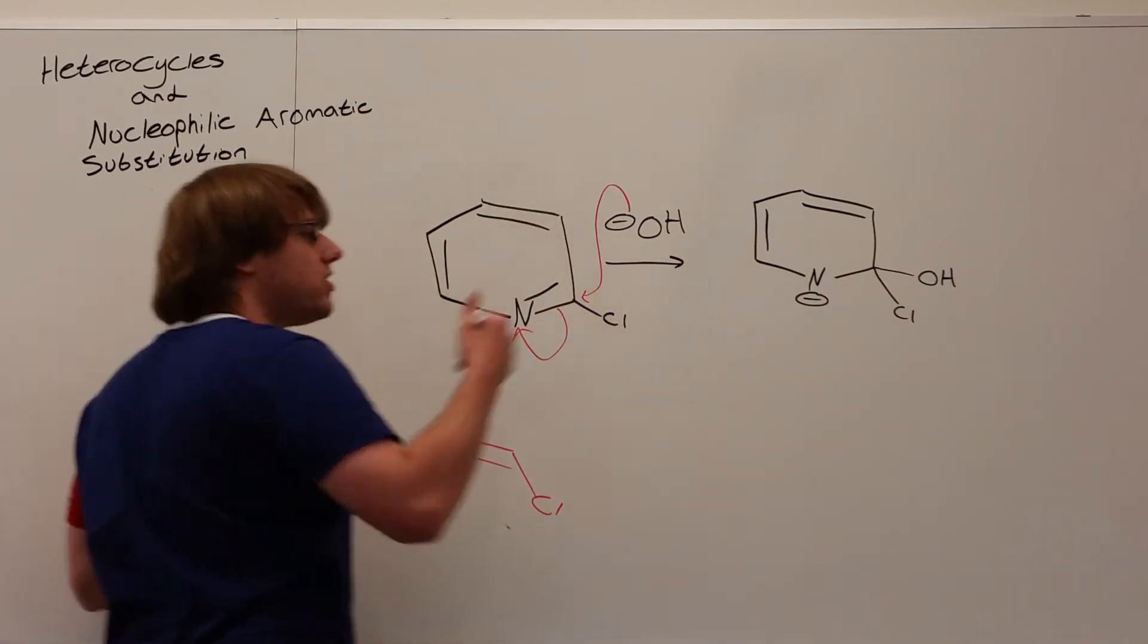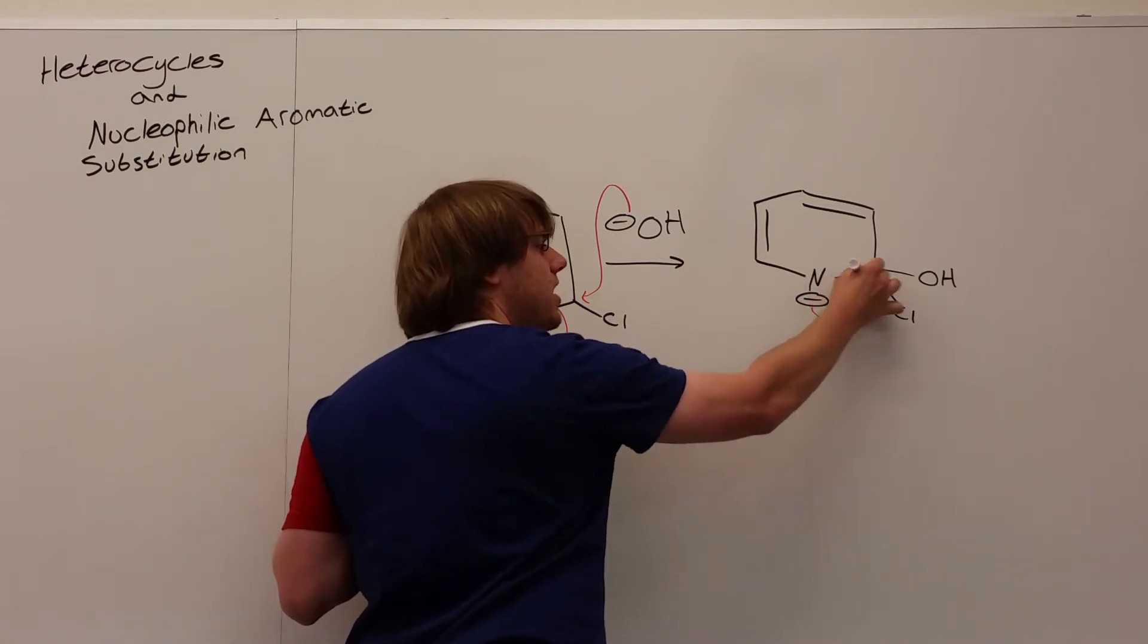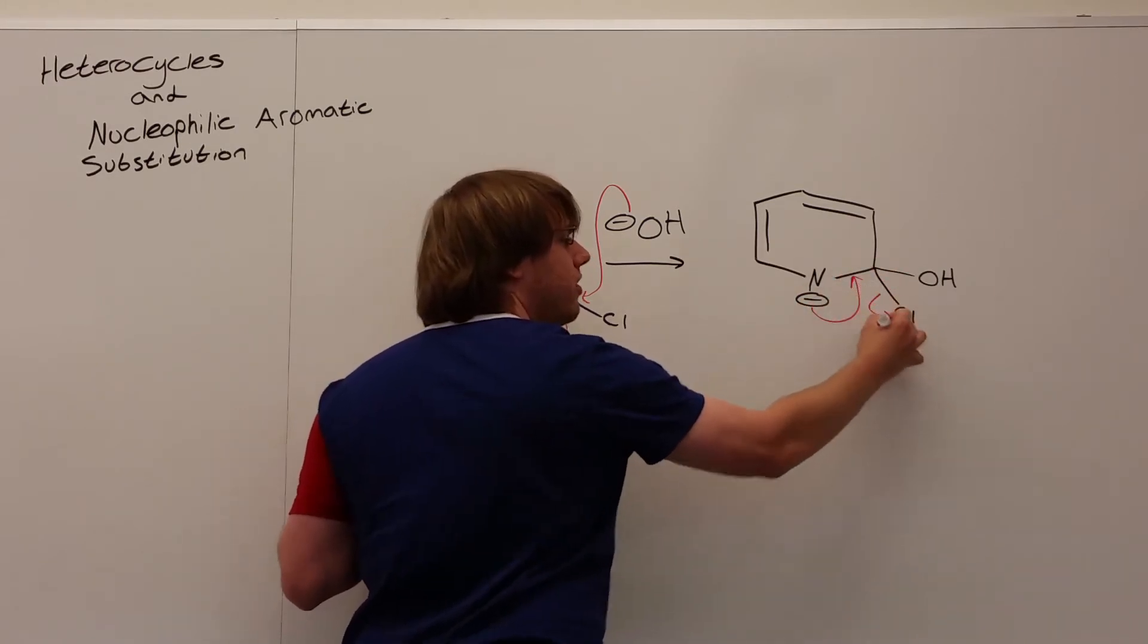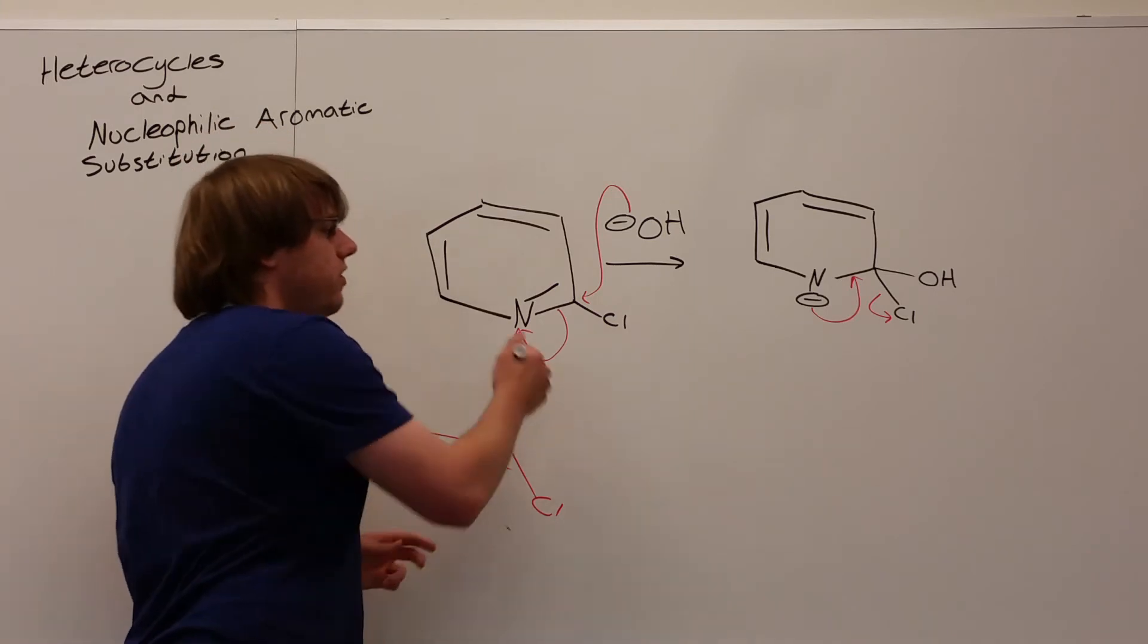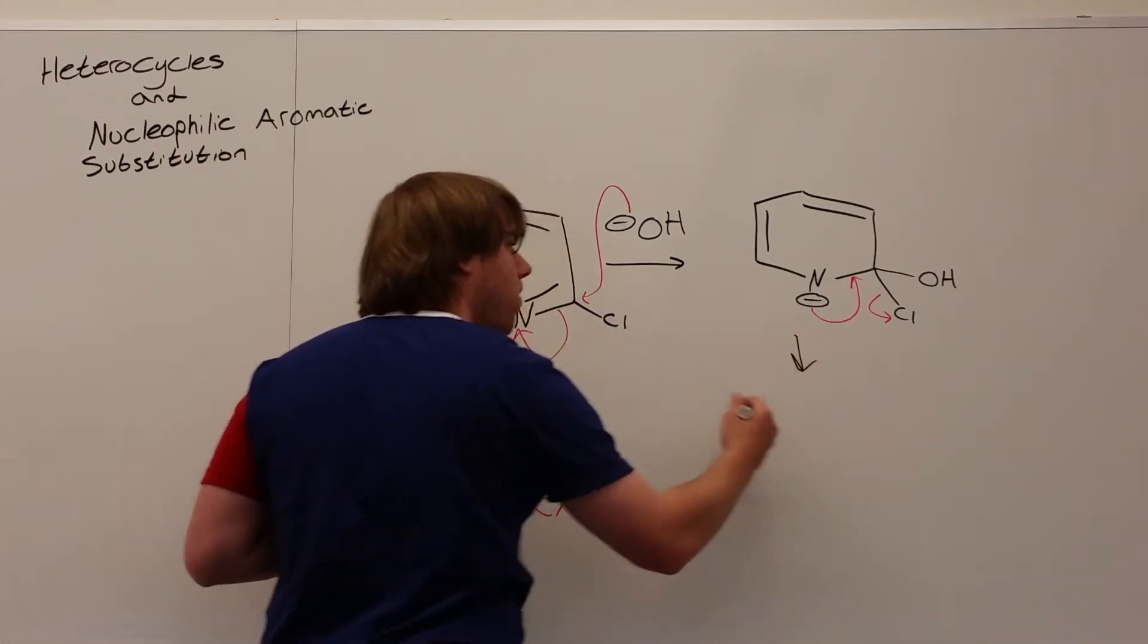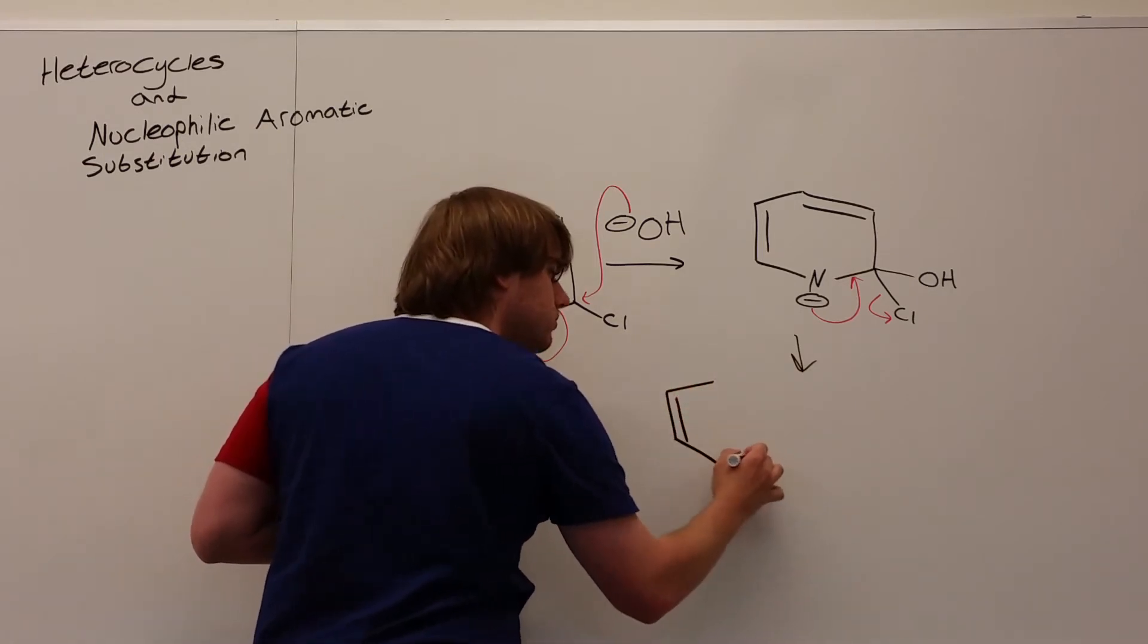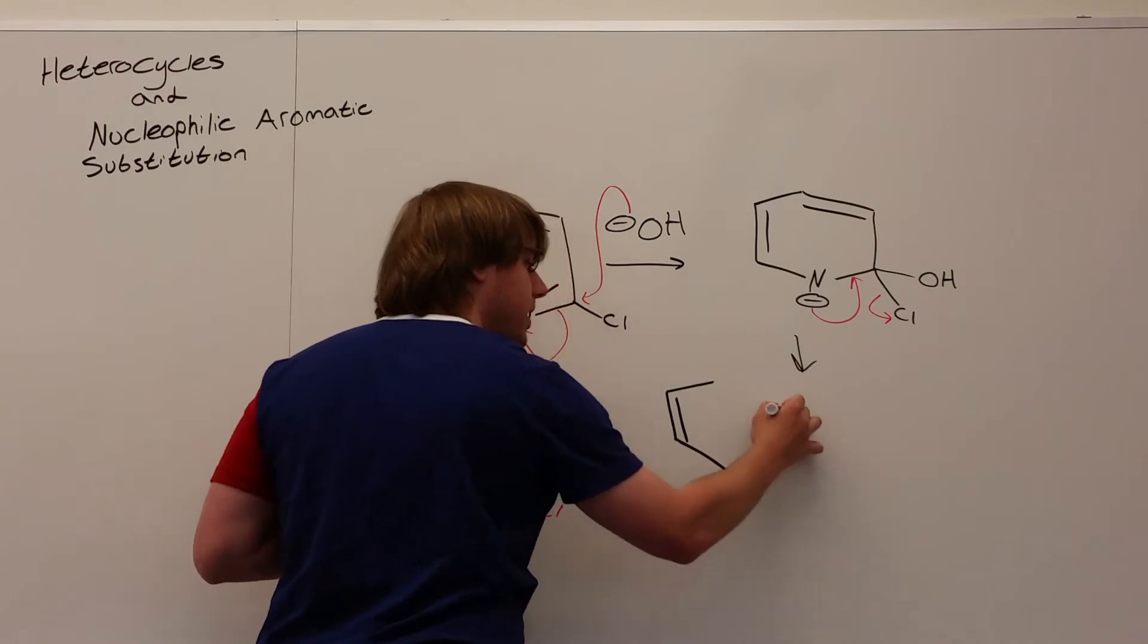The second half of the reaction is just the nitrogen will take those electrons that it got, resonate back down, and kick the chlorine off. Ultimately what happens is the leaving group is replaced by what's over the arrow.